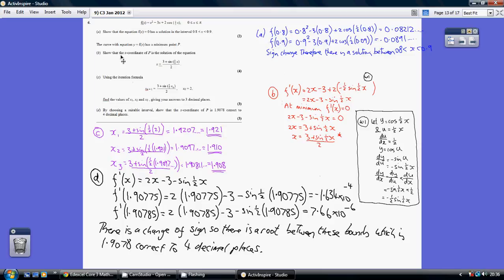Now for part b, show that the x-coordinate p is the solution of the equation, this. So we need to differentiate our function. f'(x) equals 2x minus 3, and then the differential of this final term, and remember the shortcut way of doing this.